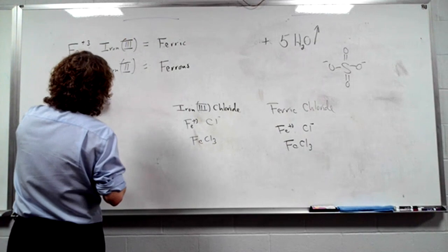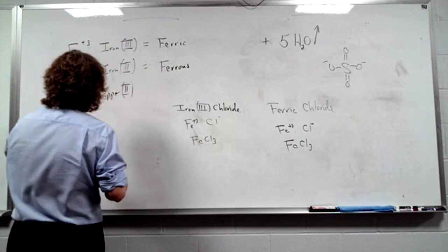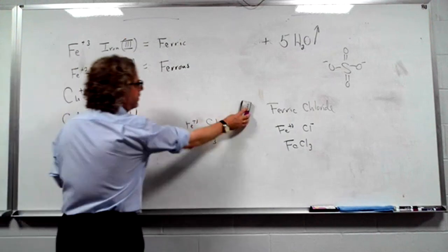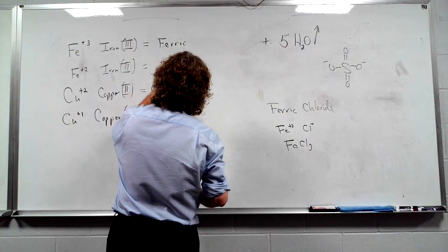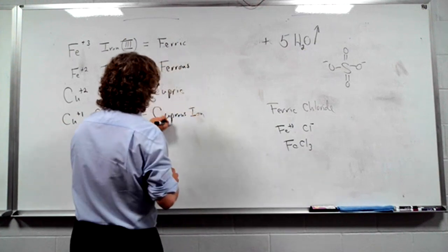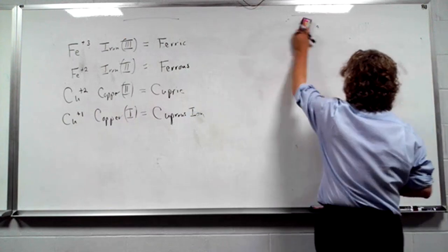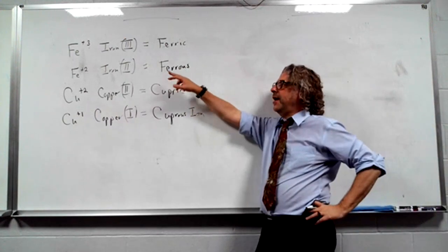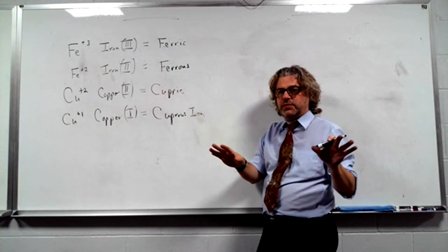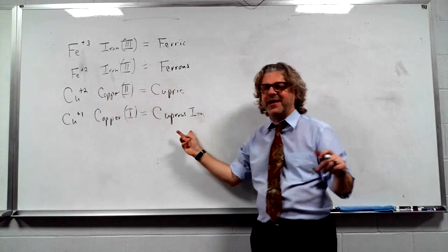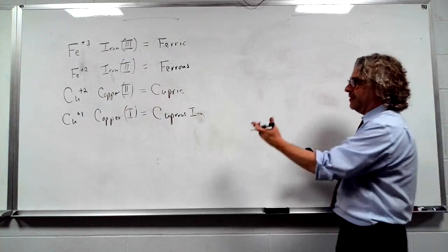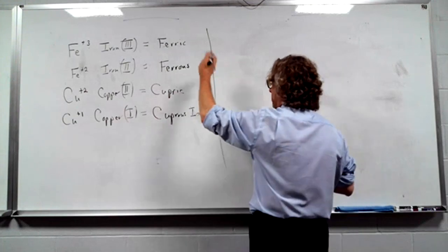Cu+2 is copper 2; Cu+1 is copper 1. Copper 2 is called cupric. Copper 1 is called cuprous. Iron 2 is ferrous, copper 2 is cupric. The IC suffix is always going to be the higher oxidation state — the higher number than the OUS. This is just years and years of humankind learning stuff.